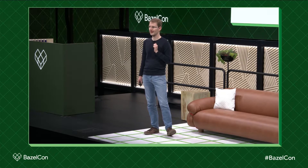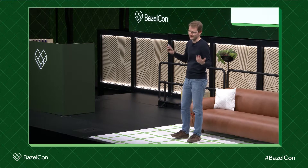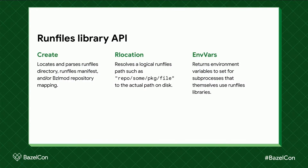So what do they do? Because they're implemented in all these different languages, their exact APIs depend on the particular programming language — there are different idioms, some languages are compiled, some are dynamic — so the exact interface will always be a bit different. But generally speaking there are these three functions. There is a create function that gives you some kind of a run files object that just parses all the metadata, tries to locate the manifest or the directory, parses a file that serializes the knowledge about Bazel's repository mappings. And then you can use the rlocation function — that's the one term to keep in mind from this talk.